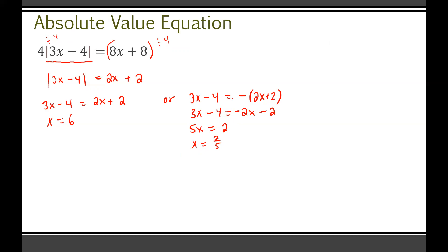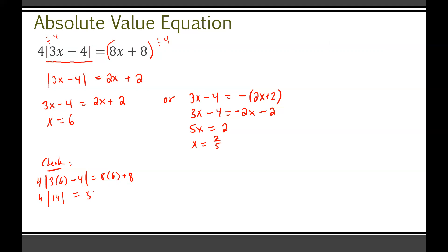Neither answer is boxed yet because we haven't confirmed they're correct — we need to check both. Checking x equals 6: plug back into the original equation to get 4 times |3(6) minus 4| which equals 4 times 14 equals 56, and 8(6) plus 8 also equals 56. So 56 equals 56 — that works, so we can box x equals 6.